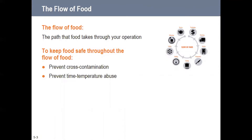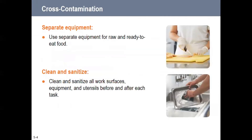The flow of food is the path that food takes through your operation — from when you purchase and receive it all the way until it goes out to the customer. The ways we keep people safe through that flow are twofold: first, preventing cross-contamination, and second, preventing time-temperature abuse. If we can control both, we have a pretty good assurance the food we serve will be safe.